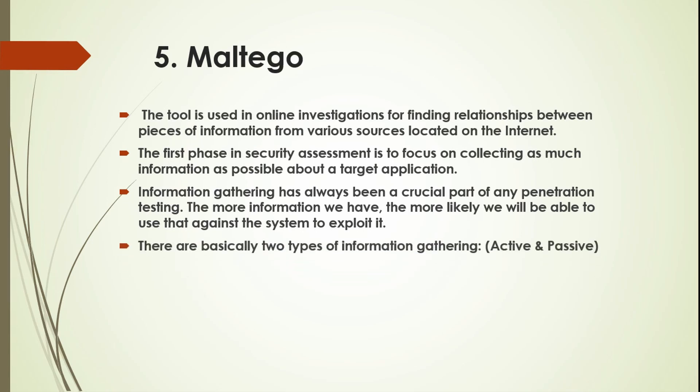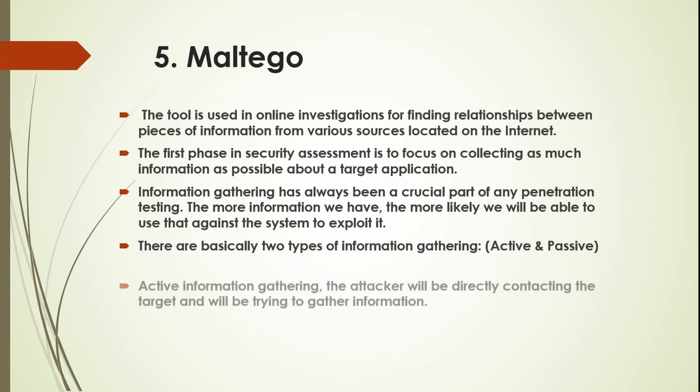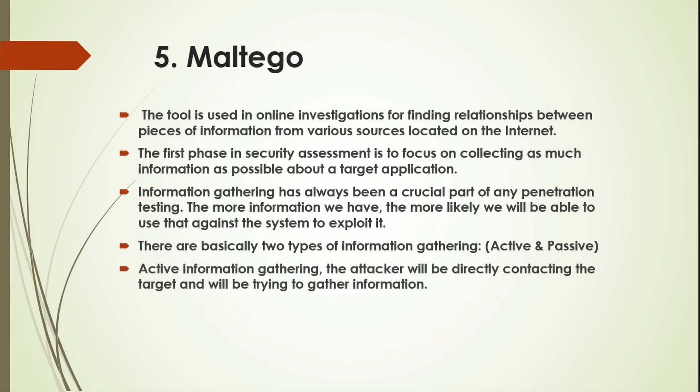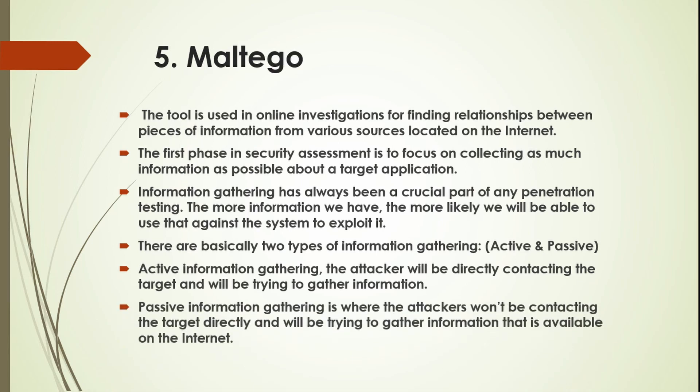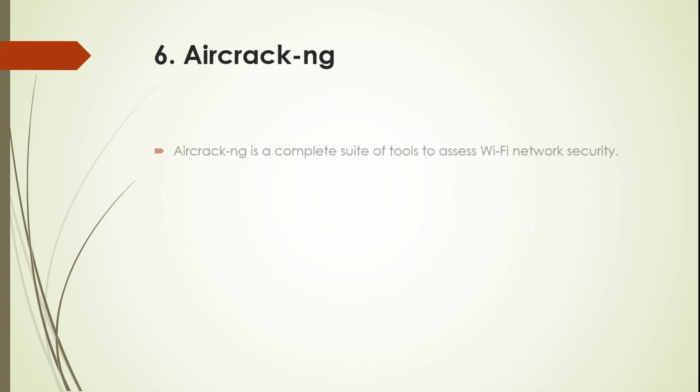There are basically two types of information gathering: active and passive. In active information gathering, the attacker will be directly contacting the target and trying to gather information. In passive information gathering, the attacker will be trying to gather information that is available on the internet without directly engaging the target.